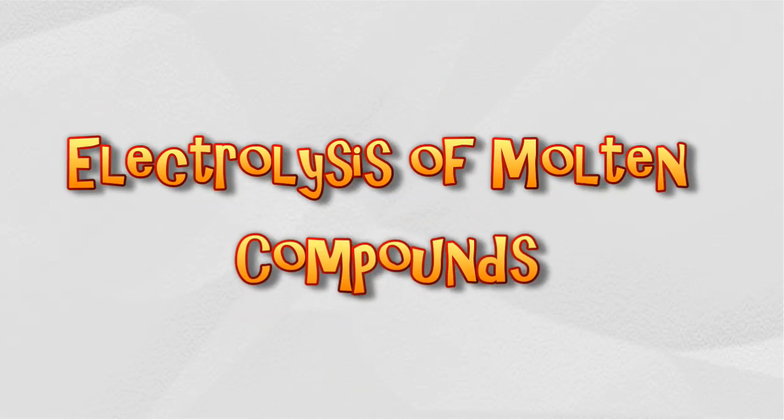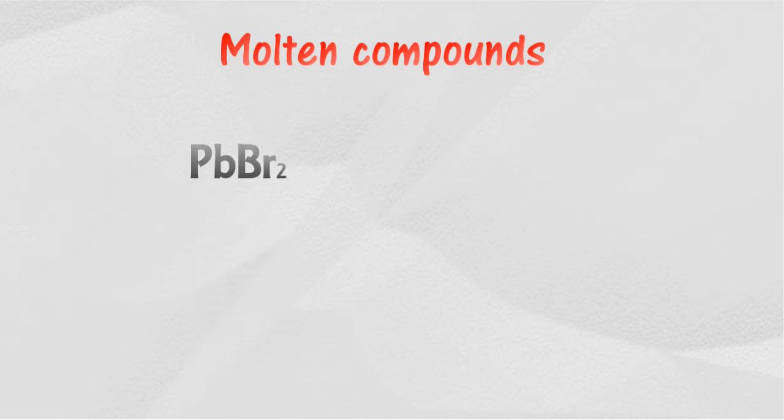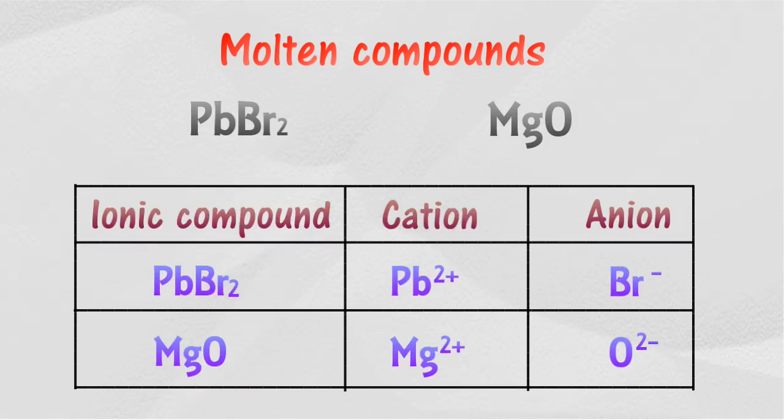A molten compound is a compound that has been melted down into a liquid. Molten compounds which can be electrolyzed are made from ionic compounds, such as lead(II) bromide and magnesium oxide.